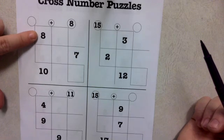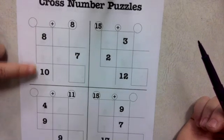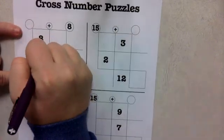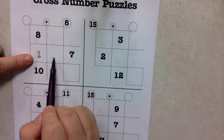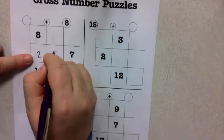So, in this case, the only thing that I can really do so far is 8 plus something is 10, 8 plus 2 is 10. Well, now what can I do? I could do 2 plus something is 7, that would be 5.